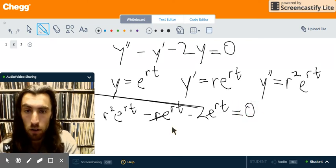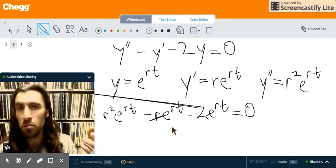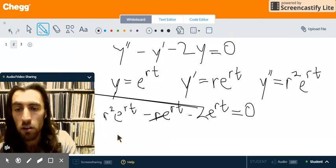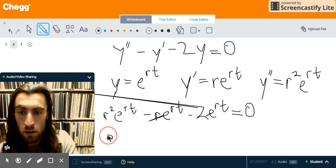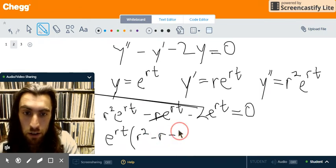Great. So, you'll see that e to the rt is a factor in each of the three terms that we have in this equation. So, I'm going to factor that out. And then, we're going to see what we have left over. So, in the first term, we just have r squared. The second term, we have minus r. The third term, we just have 2.